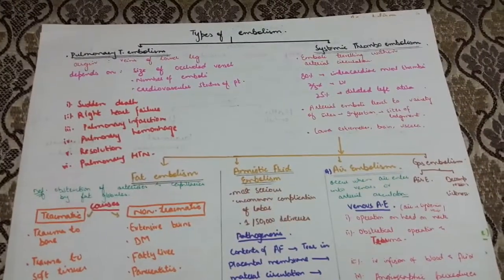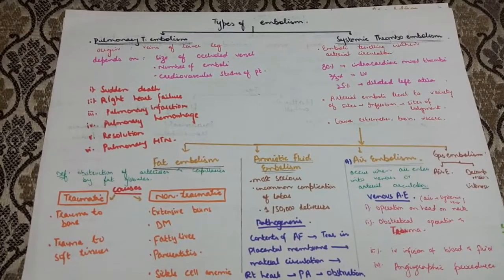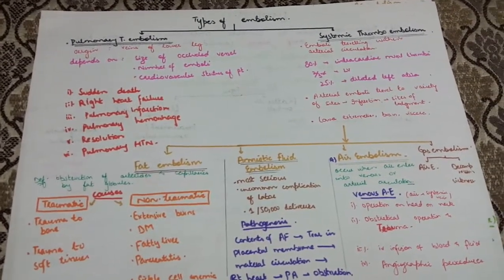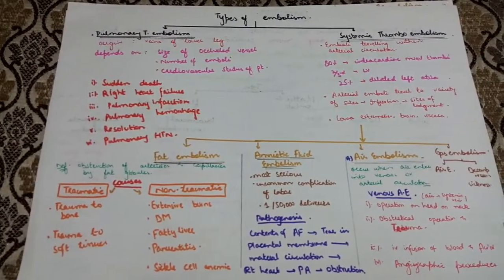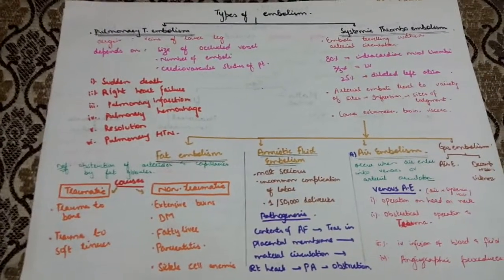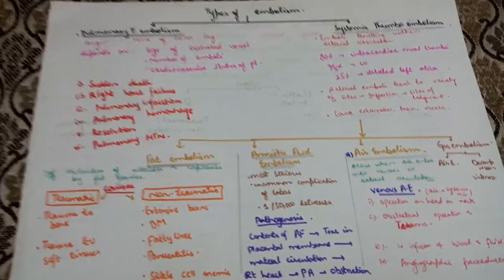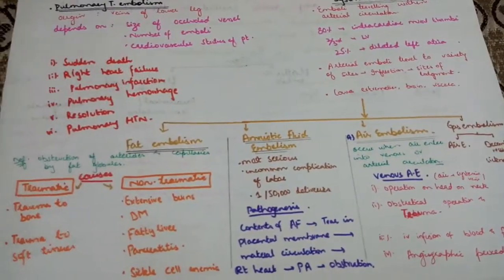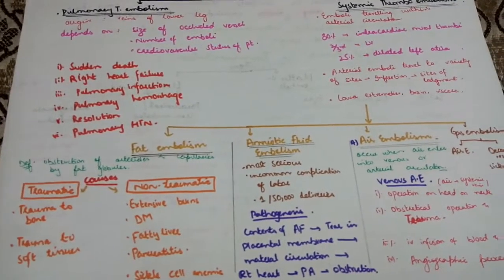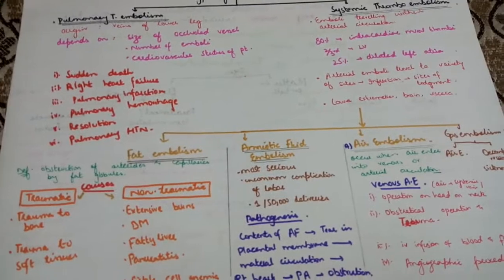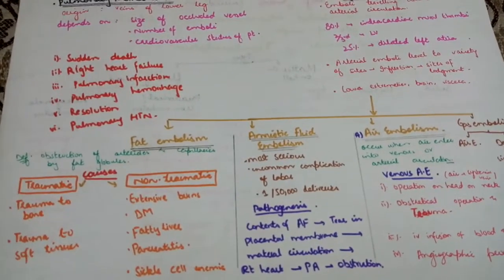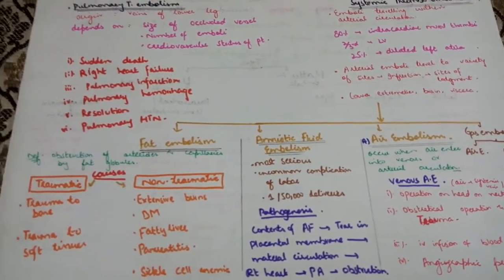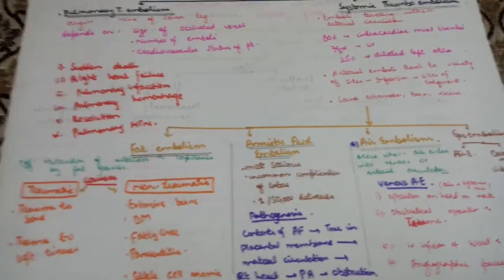Let's discuss pulmonary thromboembolism. Origin is veins of lower leg. It depends on size of occluded vessel, number of emboli, and cardiovascular status of the patient. It leads to sudden death. Causes include massive pulmonary embolism and pulmonary infarction, which occurs due to obstruction of small size pulmonary arterial branches, and pulmonary hemorrhage.